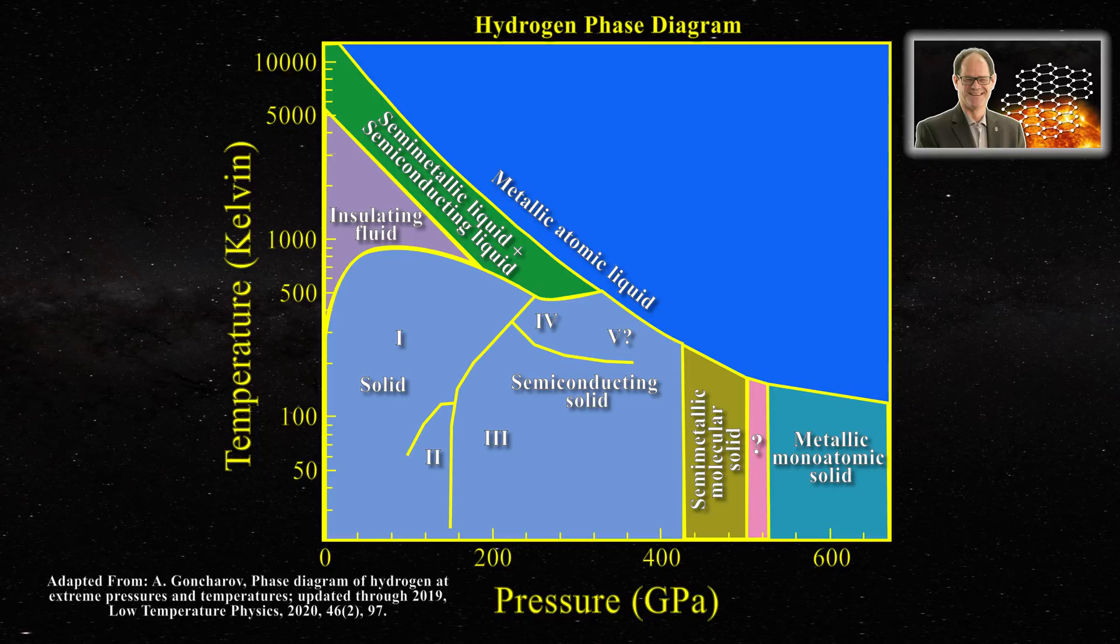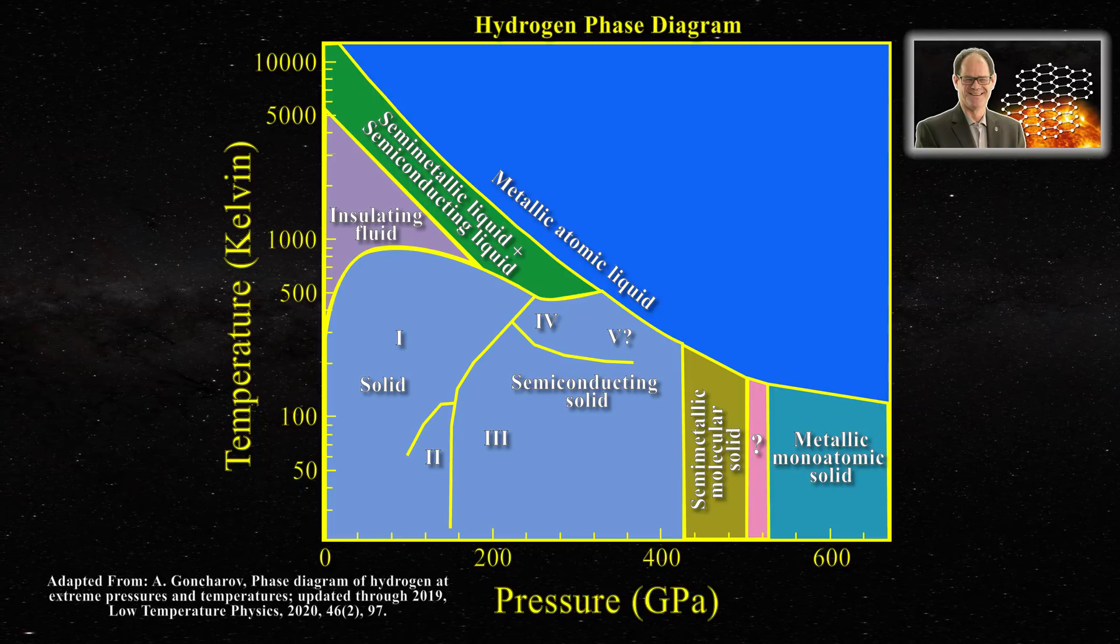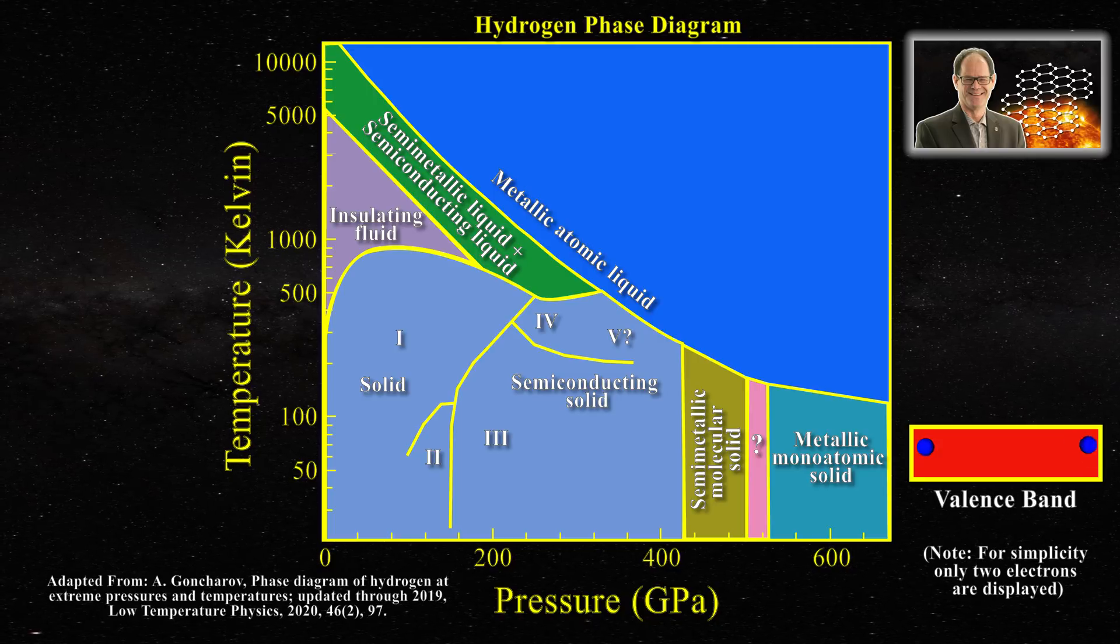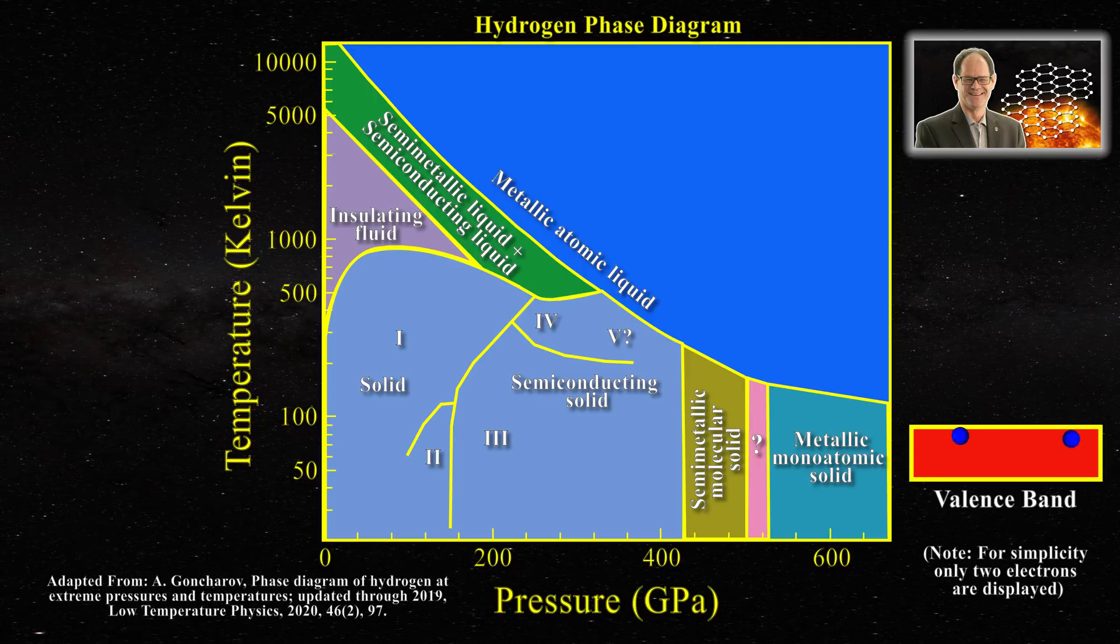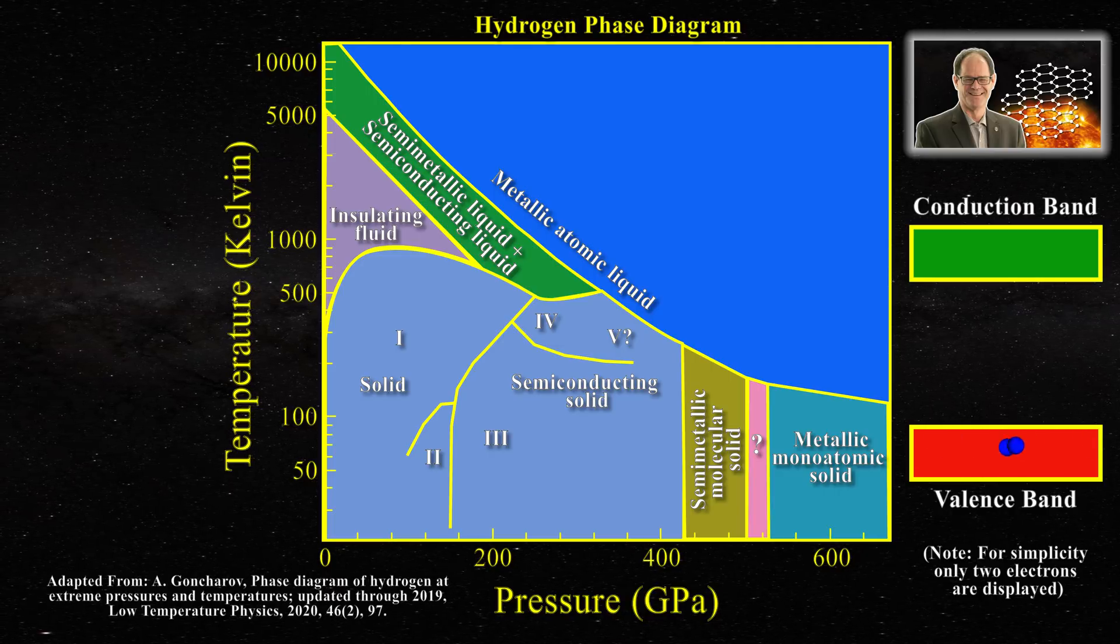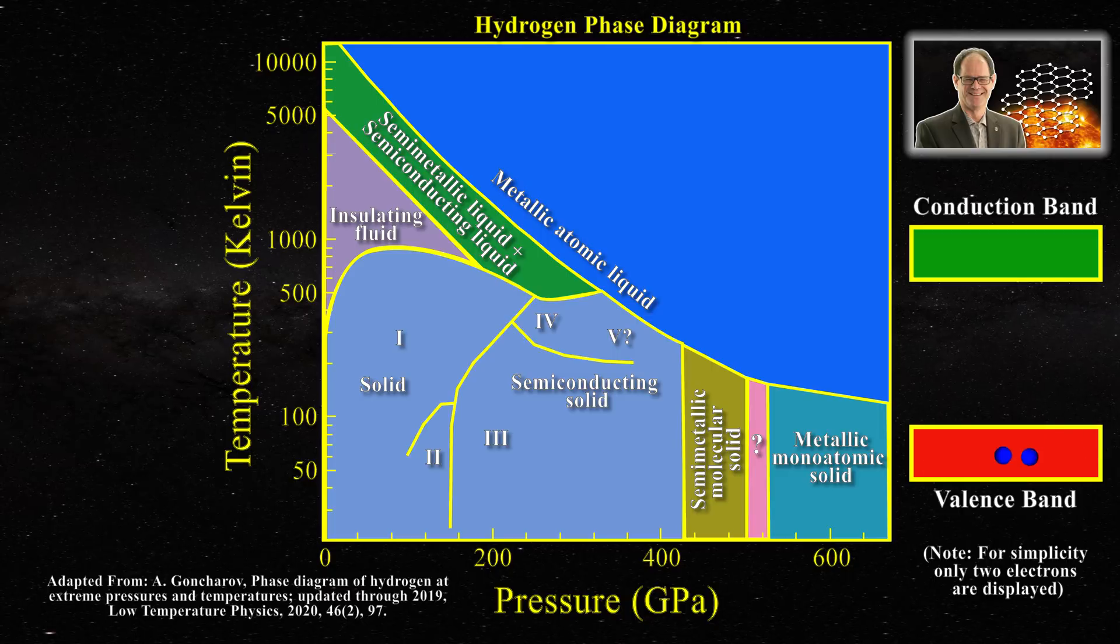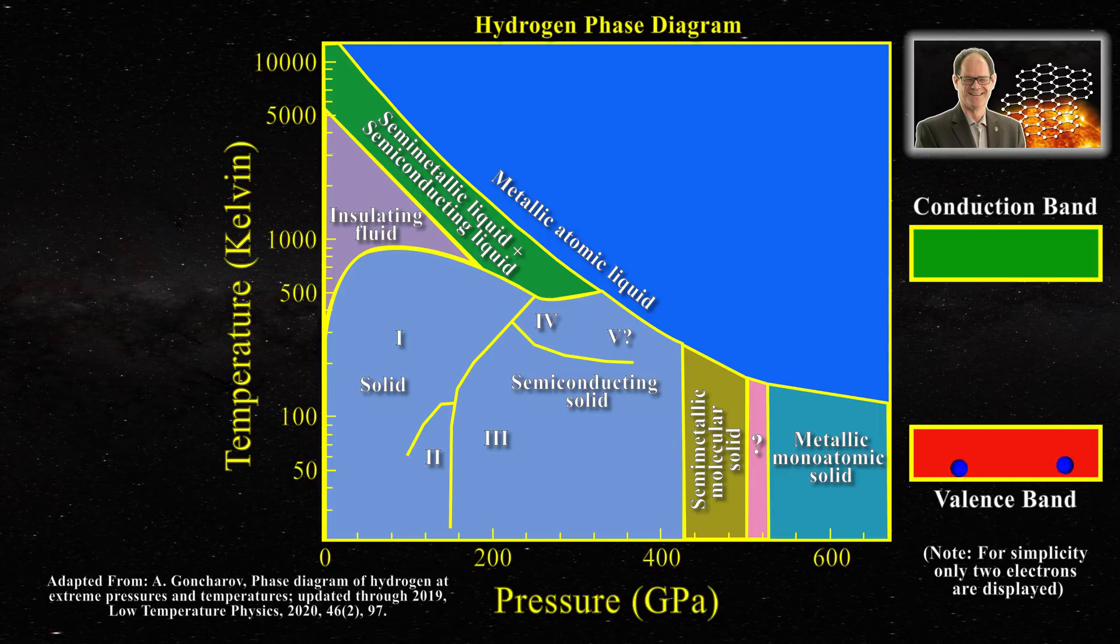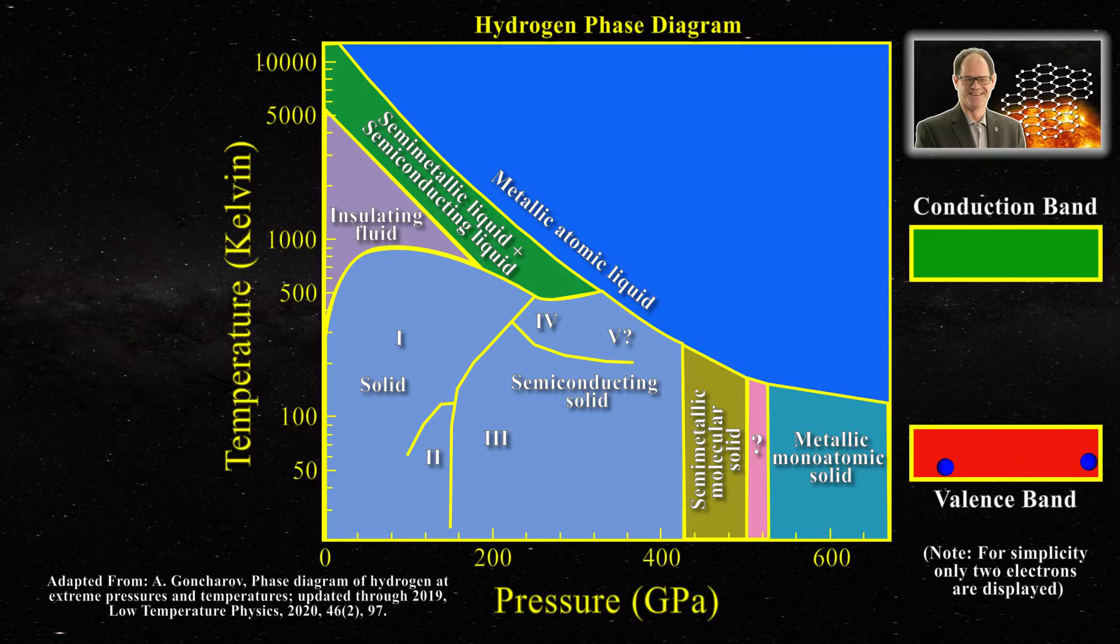As a brief recap, when hydrogen is at relatively low pressures and temperatures, its electrons reside in the valence band and one has molecular diatomic hydrogen. A conduction band is sitting high above the valence band, but under normal conditions, electrons are unable to reach it. That is why hydrogen is an insulator at lower temperatures and pressures.